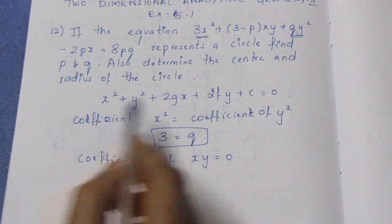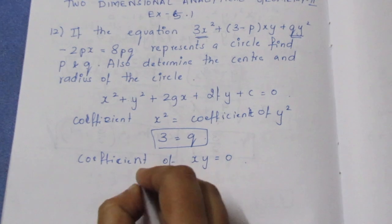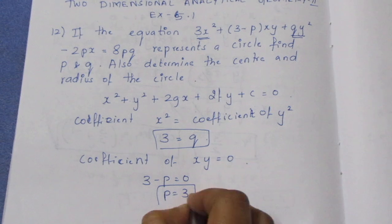If the coefficient of xy term is cancelled, then 3 - p = 0, so p = 3. And q is also equal to 3 based on the coefficient condition.